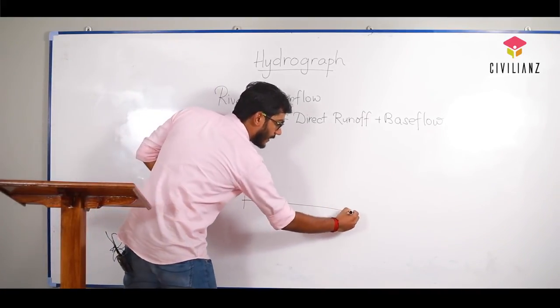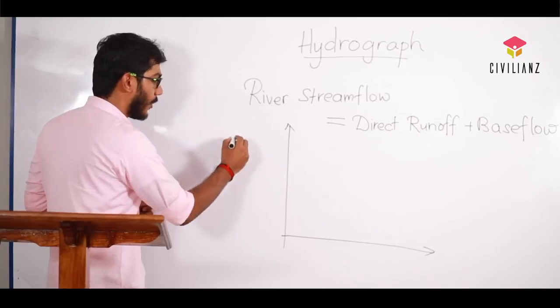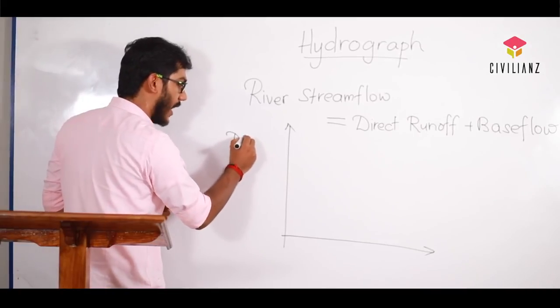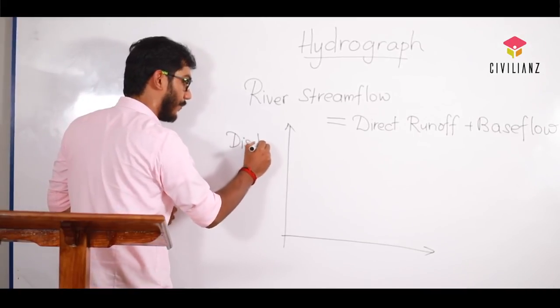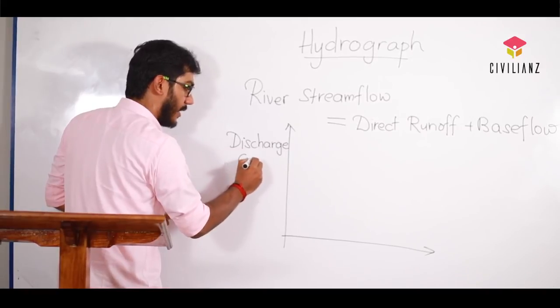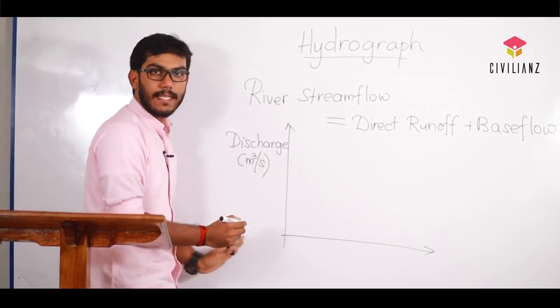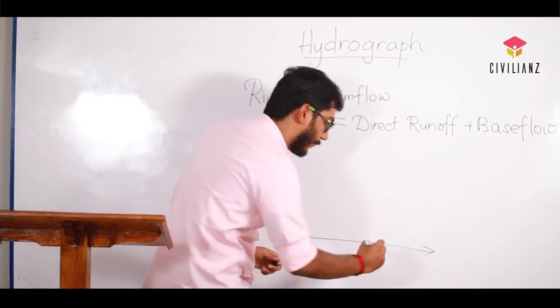When you draw a typical hydrograph, the Y-axis has the discharge in cubic meters per second, and the X-axis represents time.